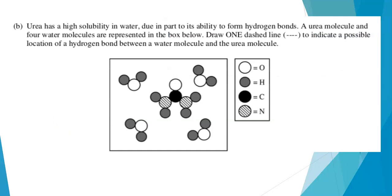Urea is very soluble in water because it can form hydrogen bonds between water and urea. We've got a depiction of a urea molecule surrounded by four water molecules in this box. The question asks us to draw one dashed line to indicate a possible location of a hydrogen bond between a water molecule and urea. This question was scored out of one point. So it's pretty much all or nothing.